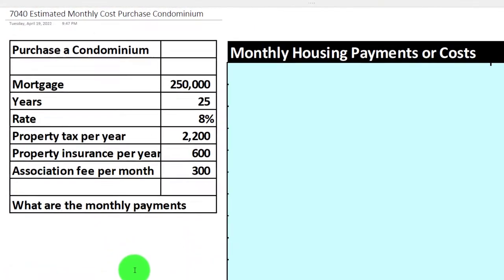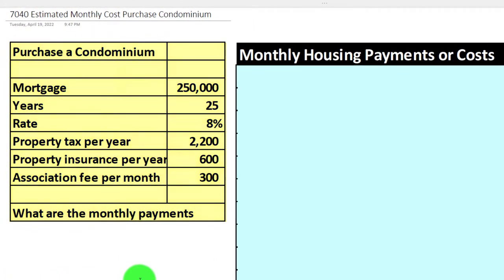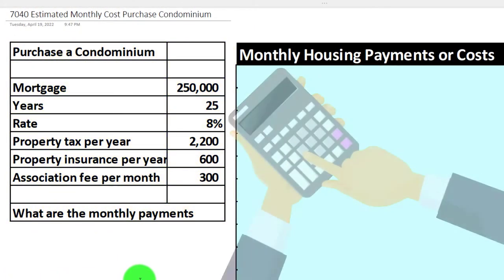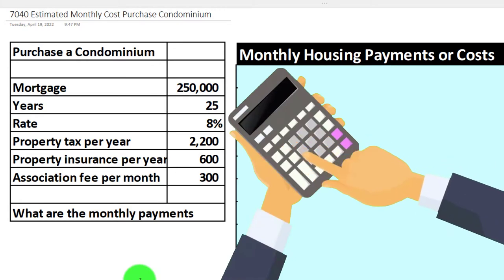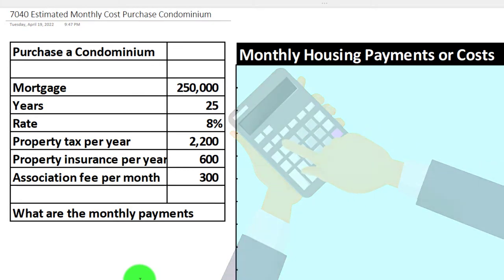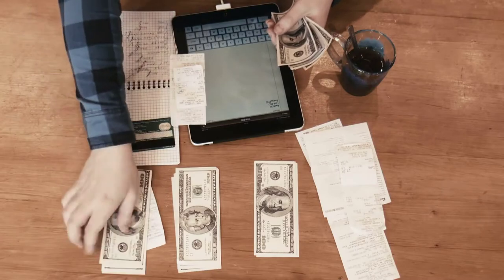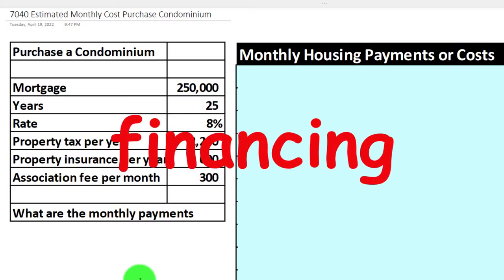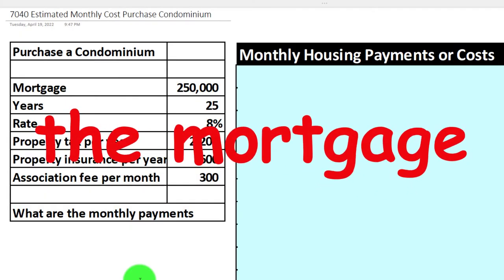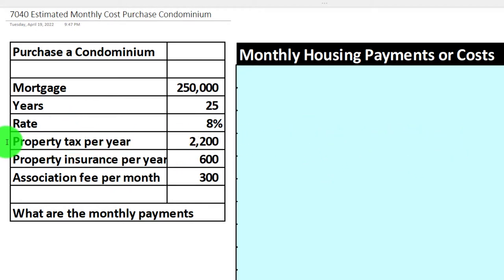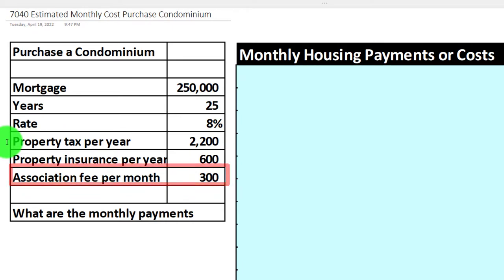We have the information on the left-hand side and we're going to use that to calculate our monthly costs for budgeting purposes. The major cost is typically related to the financing — the mortgage — so that will be the primary cost. We'll also want to consider property taxes, property insurance if applicable, and association fees if applicable.